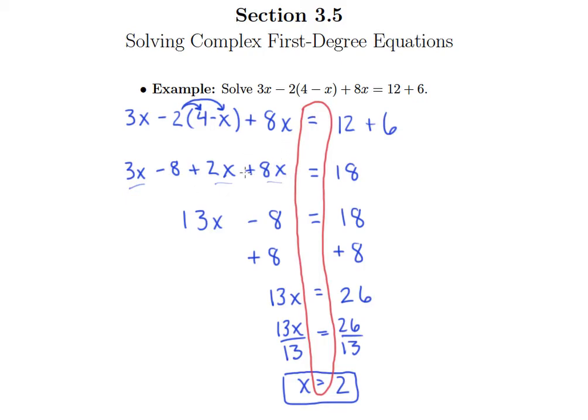So that just helped me keep things really organized. And then every time I wrote a new step I rewrote the entire equation regardless of whether I did anything with the particular term or not. So 3x, nothing happened with it but it got rewritten. 8x, nothing happened with it but it got rewritten.